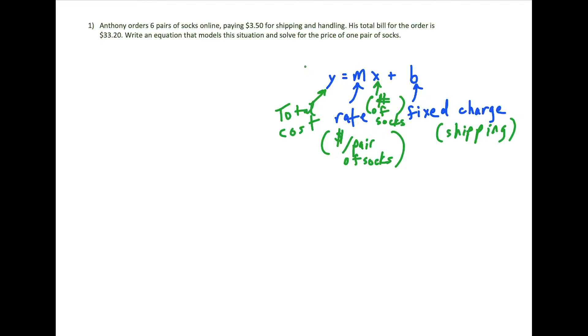So then all we have to do is extract the information from the word problem and set up our equation. We know that Anthony orders six pairs of socks, so after the equal sign we have m times six. The $3.50 that he's paying for shipping and handling represents b, the fixed charge. So we have plus $3.50. And then the total bill for the order is $33.20. That represents the total cost.